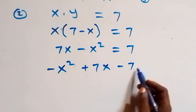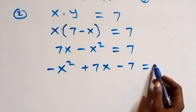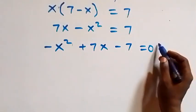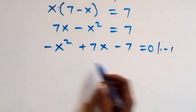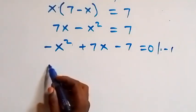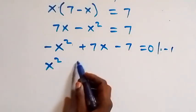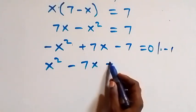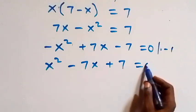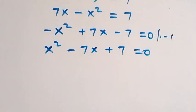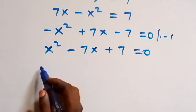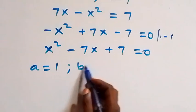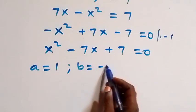Rearranging: negative x squared plus seven x minus seven equals zero. To remove the leading negative, we multiply through by negative one, giving x squared minus seven x plus seven equals zero. This is a quadratic equation where a equals one, b equals negative seven.